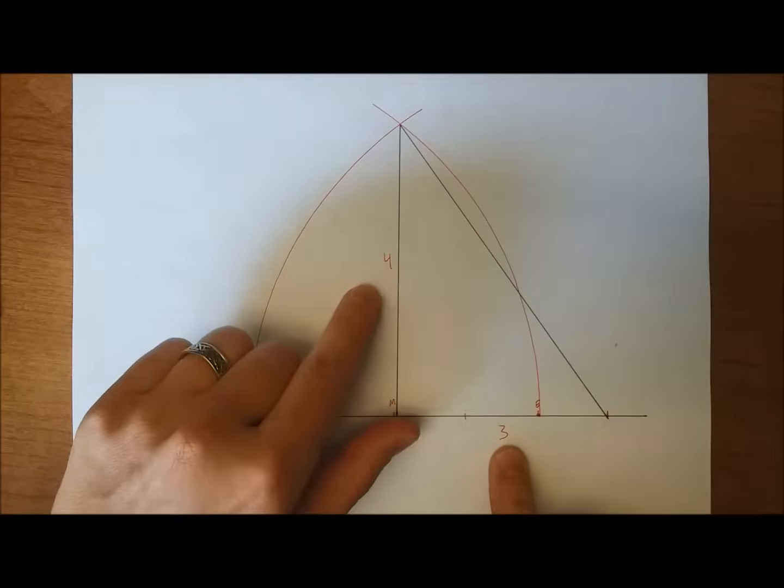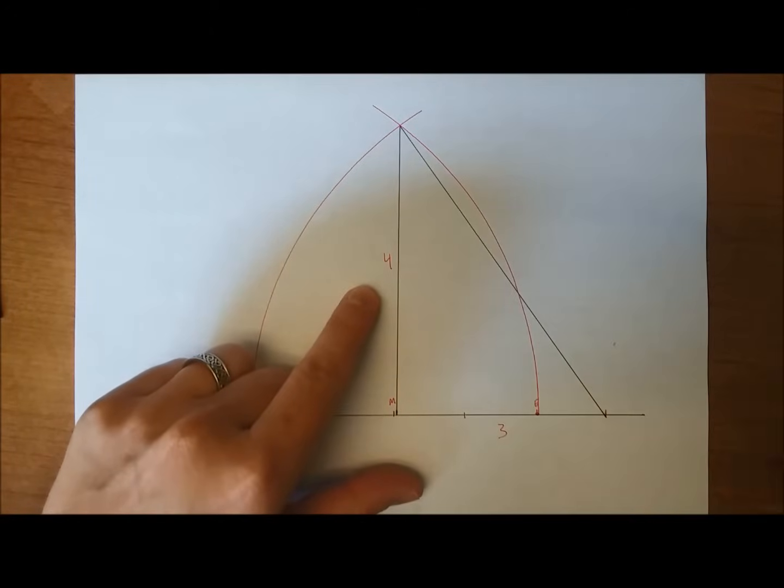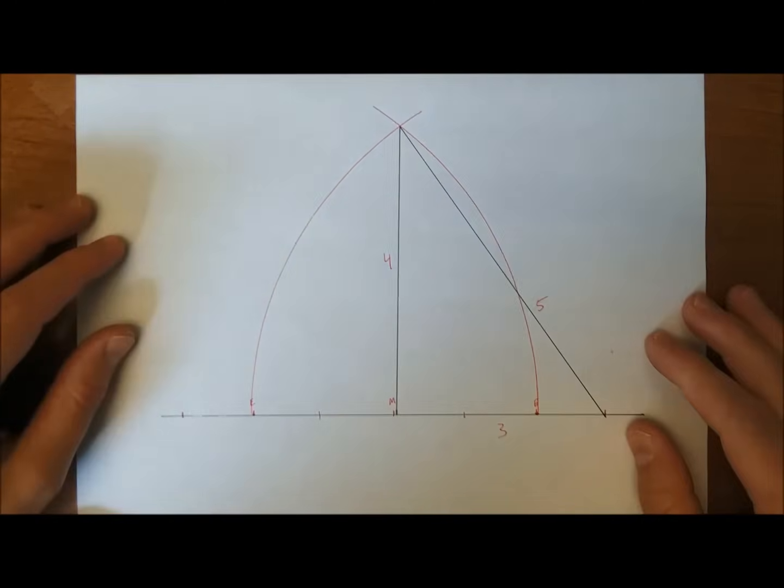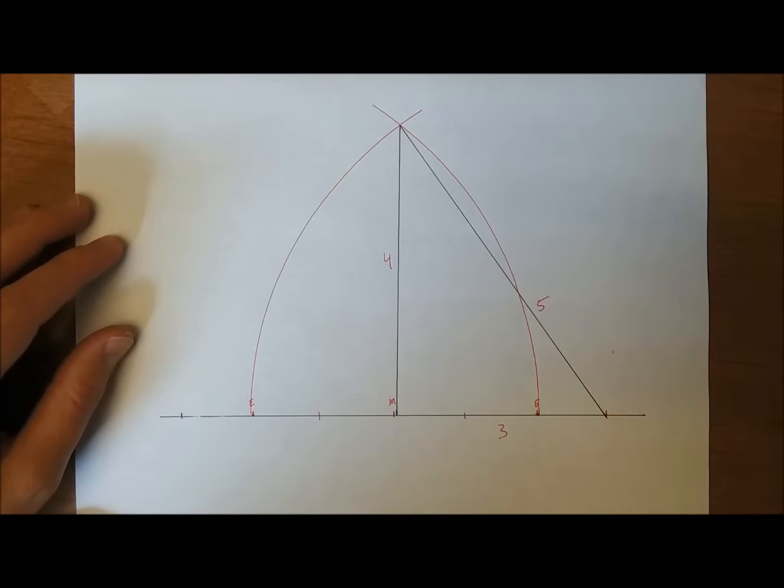We now have sides 3 and size 4, which means the hypotenuse must be 5. And this is the 3-4-5 triangle that's hidden in the medieval Gothic arch. And that's the mathematics behind the medieval Gothic arch and medieval mathematics.